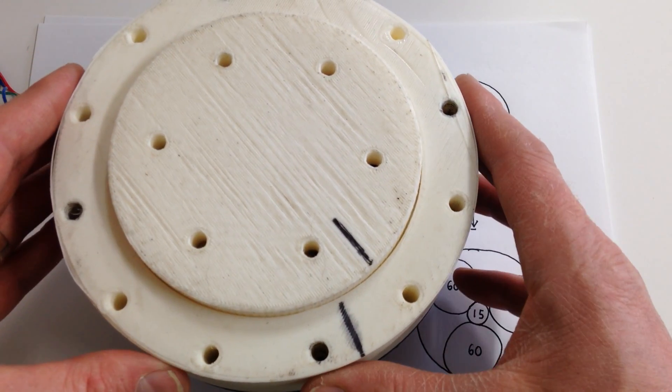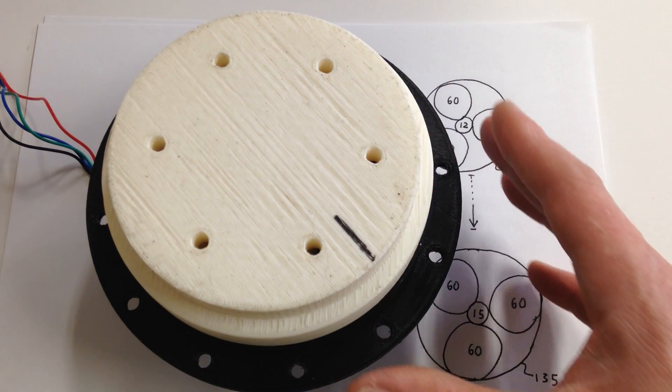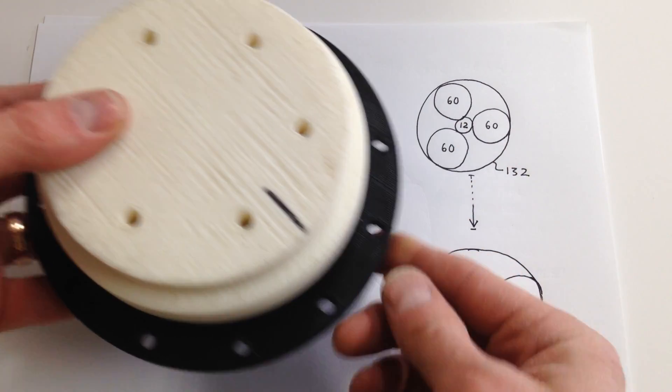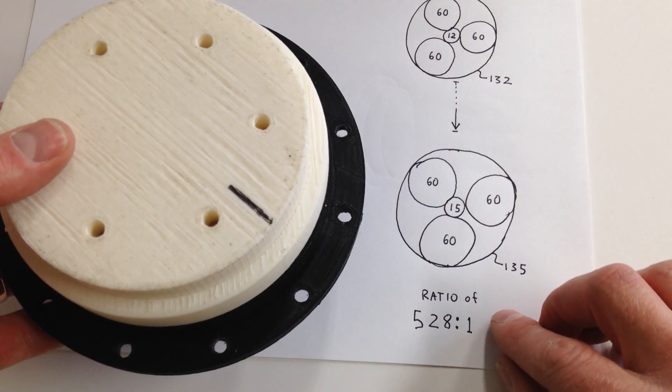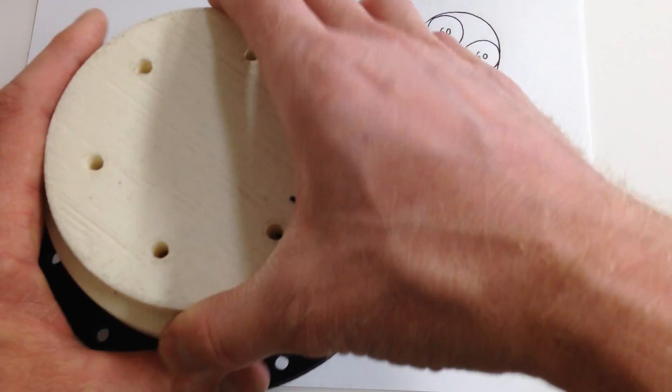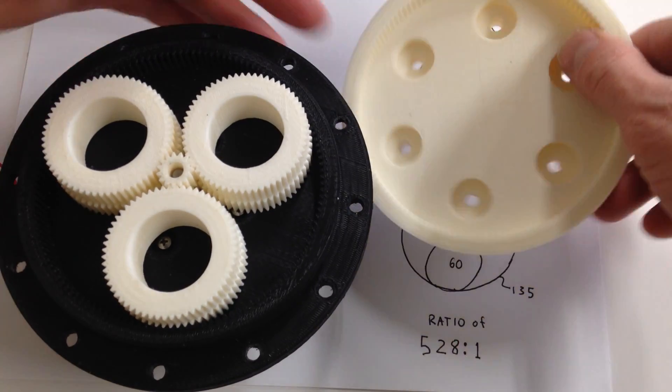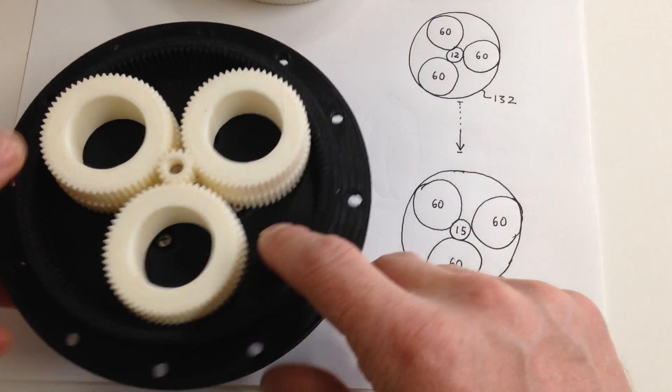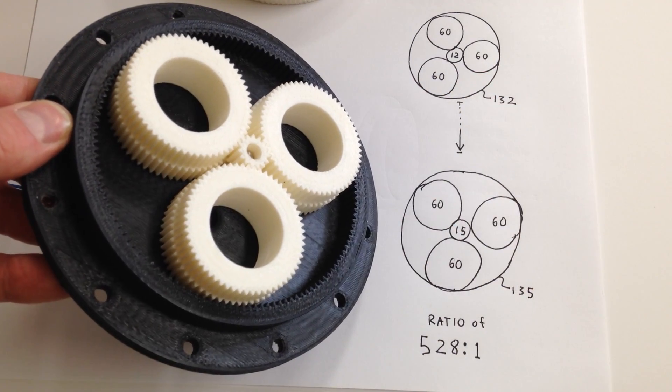The coolest thing about this, though, is watch this. I'll take the top off and open it up. This particular gear arrangement actually has a ratio of 528 to 1, and if you look at the inside, it has the output shaft with one annulus. The inside has another. You can see the teeth there.